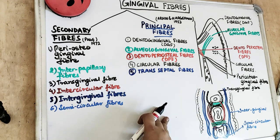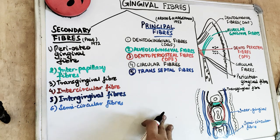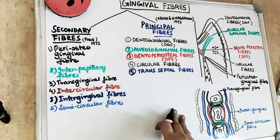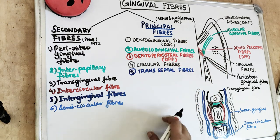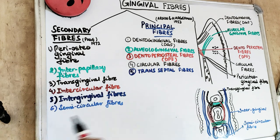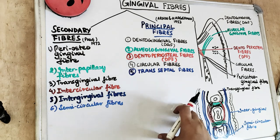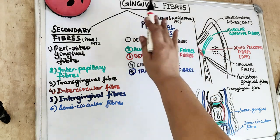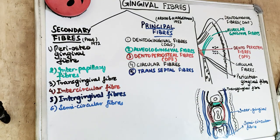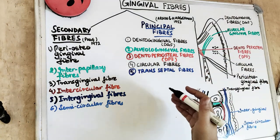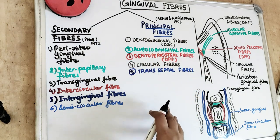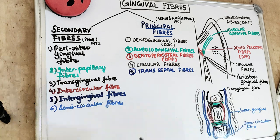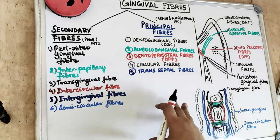In previous parts we have already covered the cells of the gingival epithelium, the gingival epithelium, and all the layers of the gingival epithelium in a story form. Now gingival fibers are the connective tissues of the marginal gingiva which are densely collagenous. These gingival fibers are bundles of collagen fiber present in the gingiva.